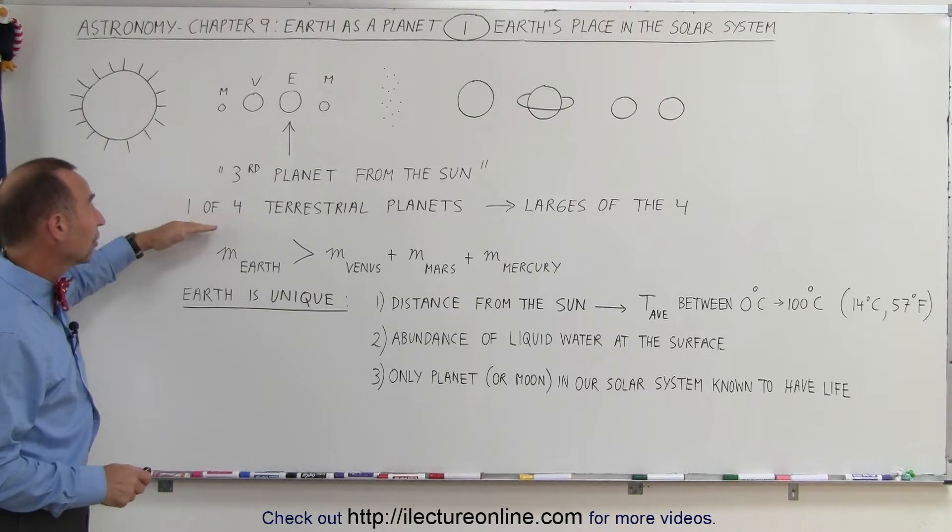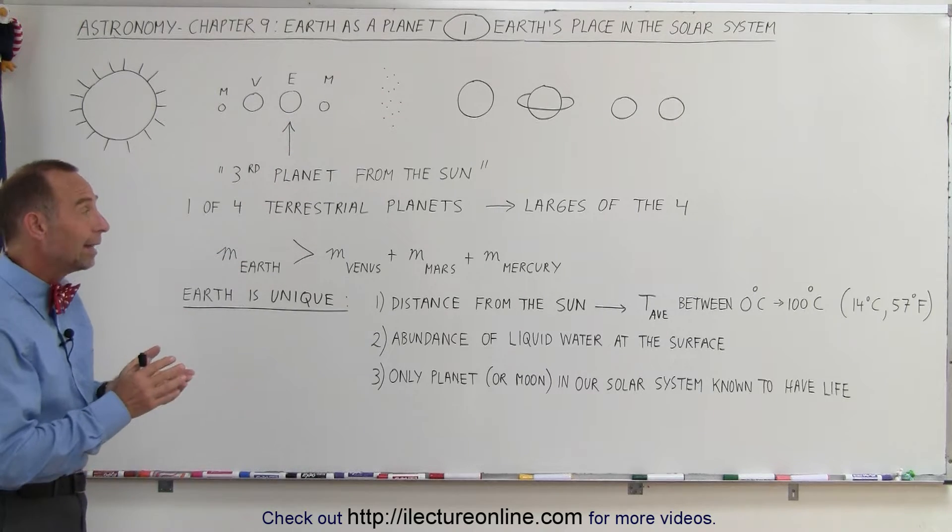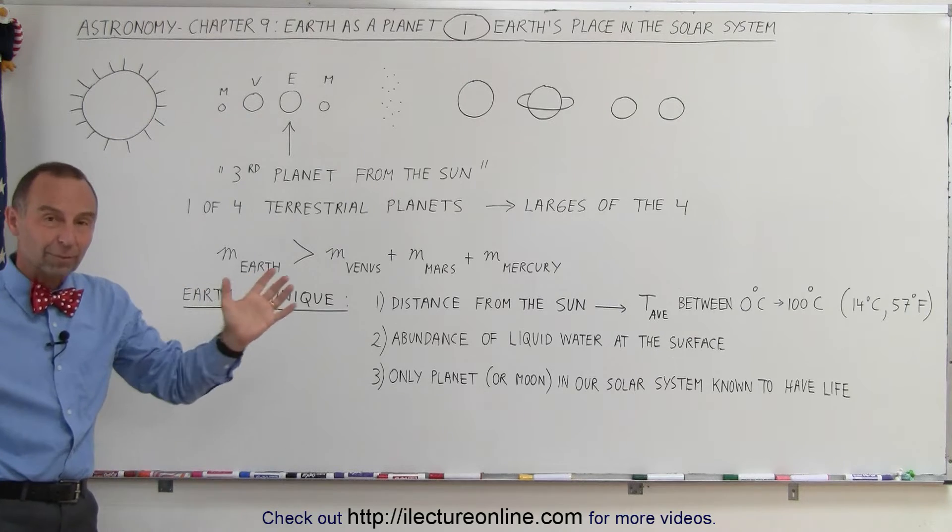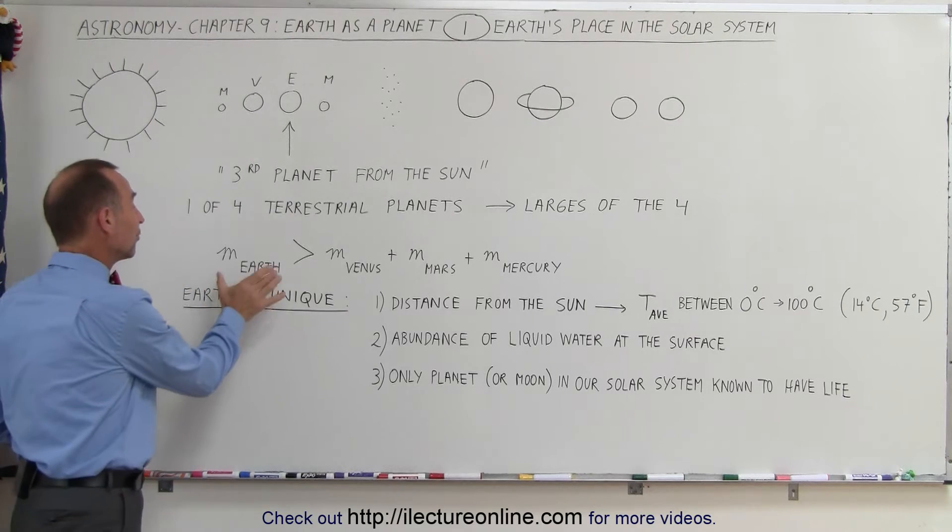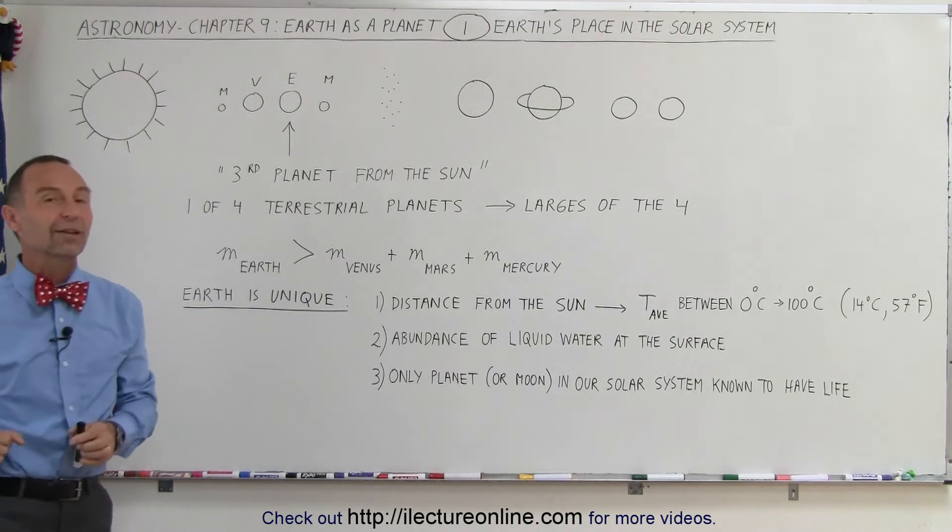What's interesting about the Earth is that it's the largest of the four terrestrial planets. Not only that, if you look at the other three terrestrial planets, you put them together, the mass of the Earth is actually larger than the mass of the other three terrestrial planets combined.